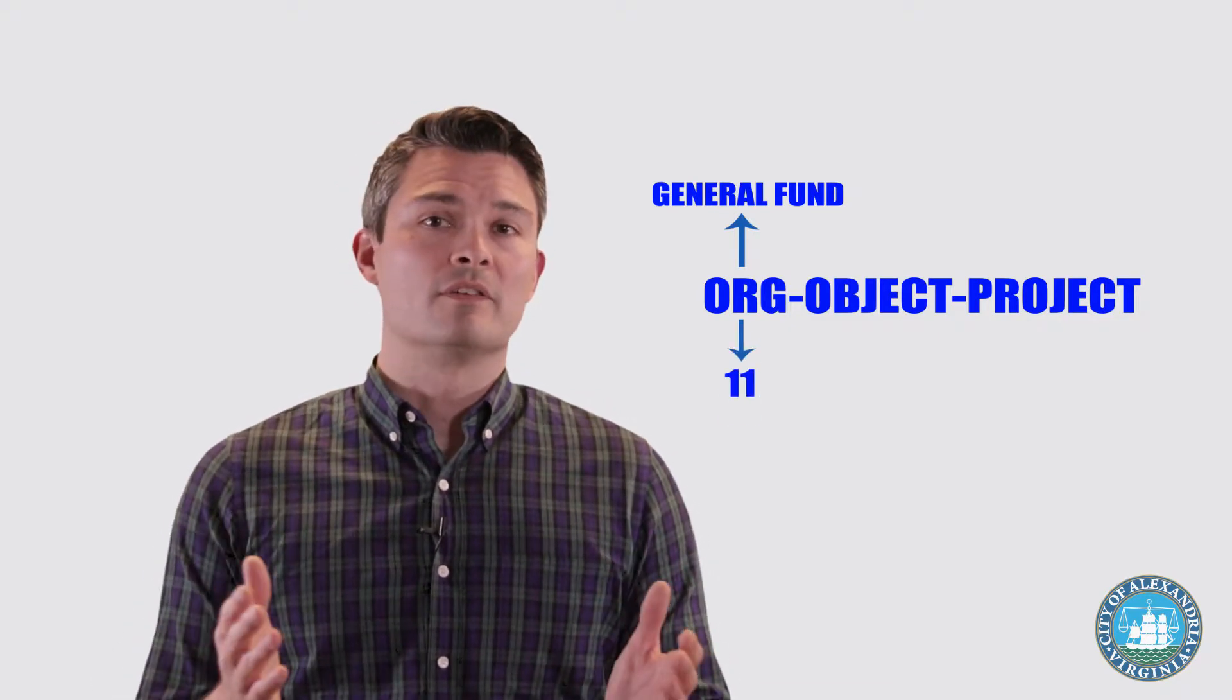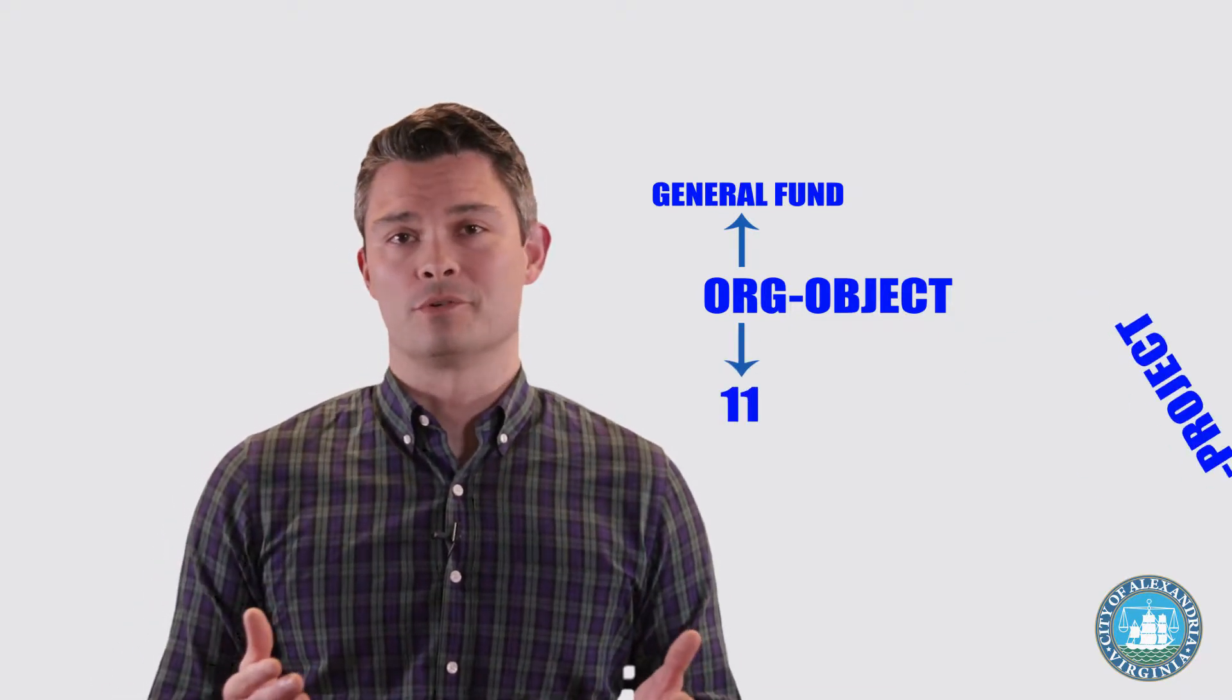At the end of our previous video, we learned about the short string, which is a combination of the segments org, object, and project in that order. Though if you're working with a general fund org, that is an org that begins with 11, then there is no project segment in the short string.